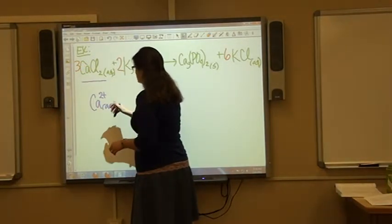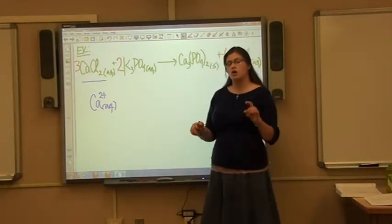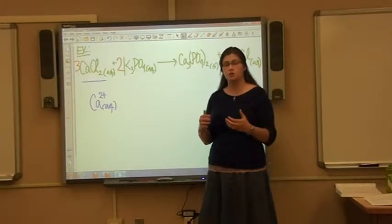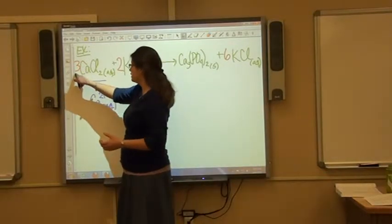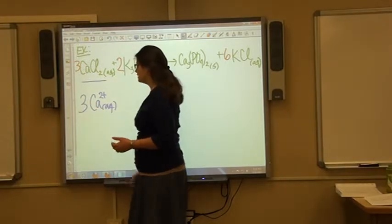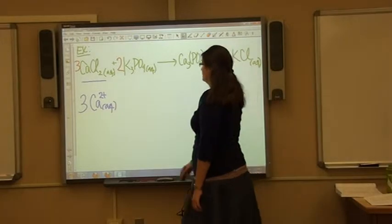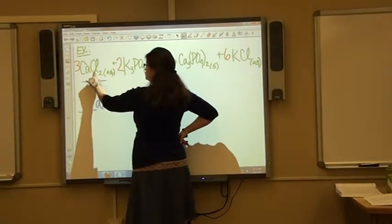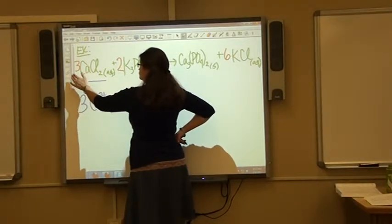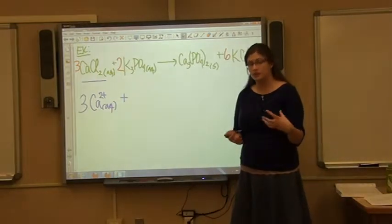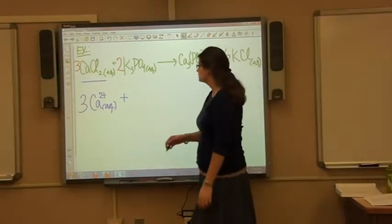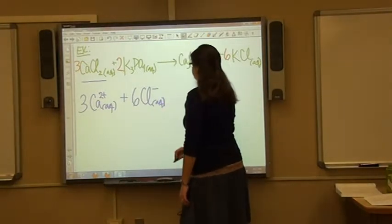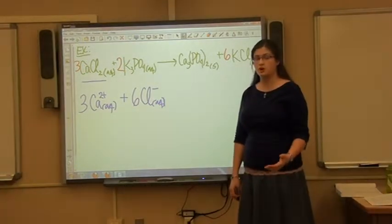Because this substance is aqueous, we label the individual ion as (aq) as well. All stoichiometric coefficients apply to all separate ions in the compound. Because there's a 3 in front of calcium chloride, we put a 3 in front of the calcium ion. For the chloride ion, there are 2 chloride ions per formula unit and 3 formula units total — 3 times 2 is 6 chloride ions.